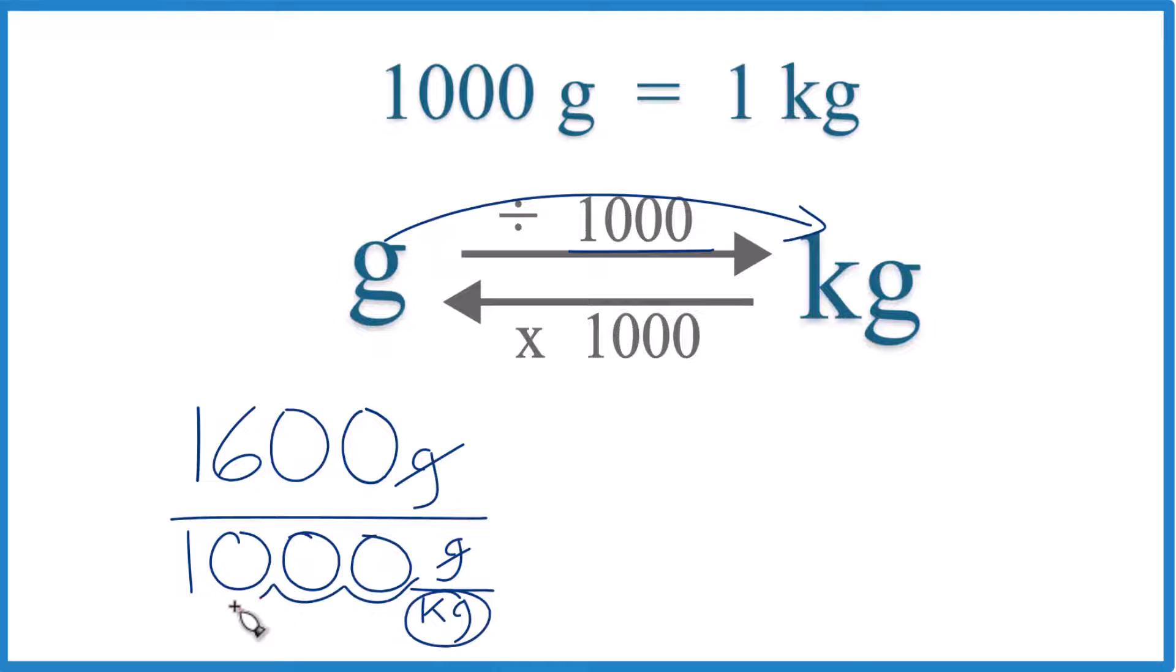Let's move our decimal place 1, 2, 3. So this is just 1. And up here, 1, 2, 3. And we end up with 1,600 grams equals 1.6 kilograms.